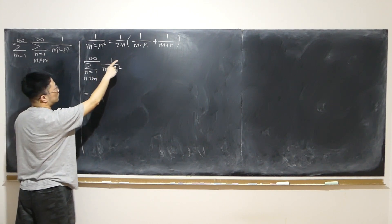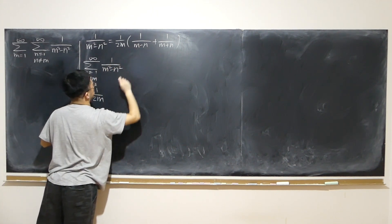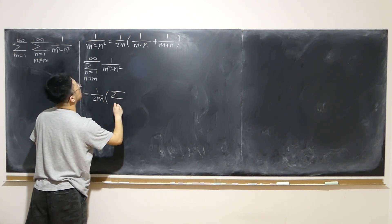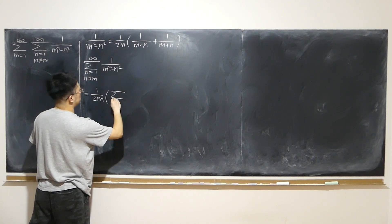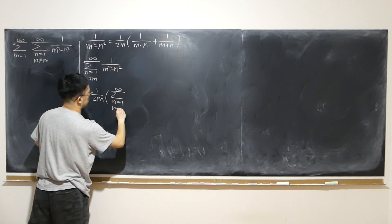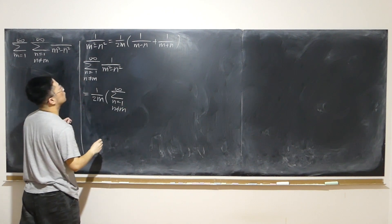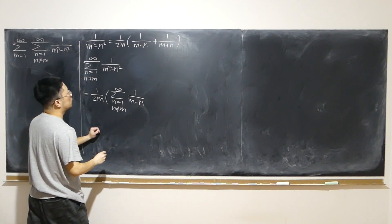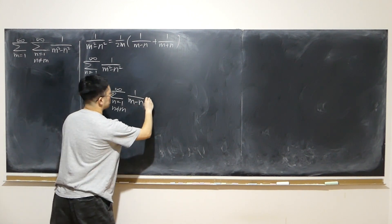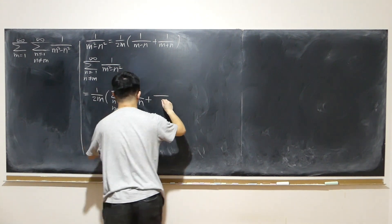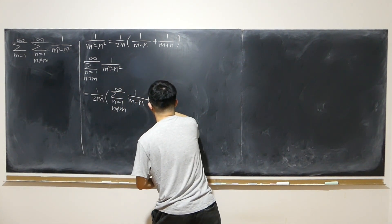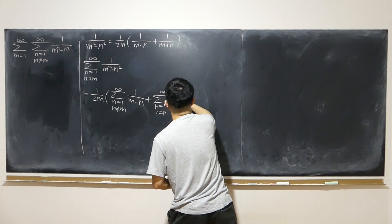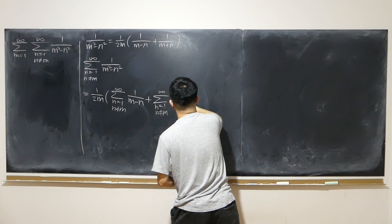Then we split the sigmas into two sums. The first sum: n goes from 1 to infinity, n not equal to m, of 1 over (n minus m). The second sum: n goes from 1 to infinity, n not equal to m, of 1 over (n plus m).